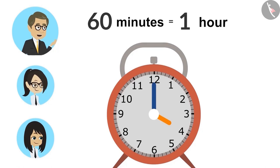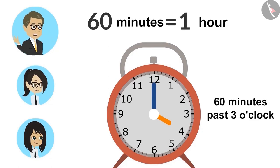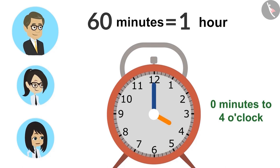60 minutes equals 1 hour. So when you say it's 60 minutes past 3 o'clock, this means that it is 1 hour more than 3 o'clock. As in, it is 0 minutes to 4 o'clock. I got it, sir.